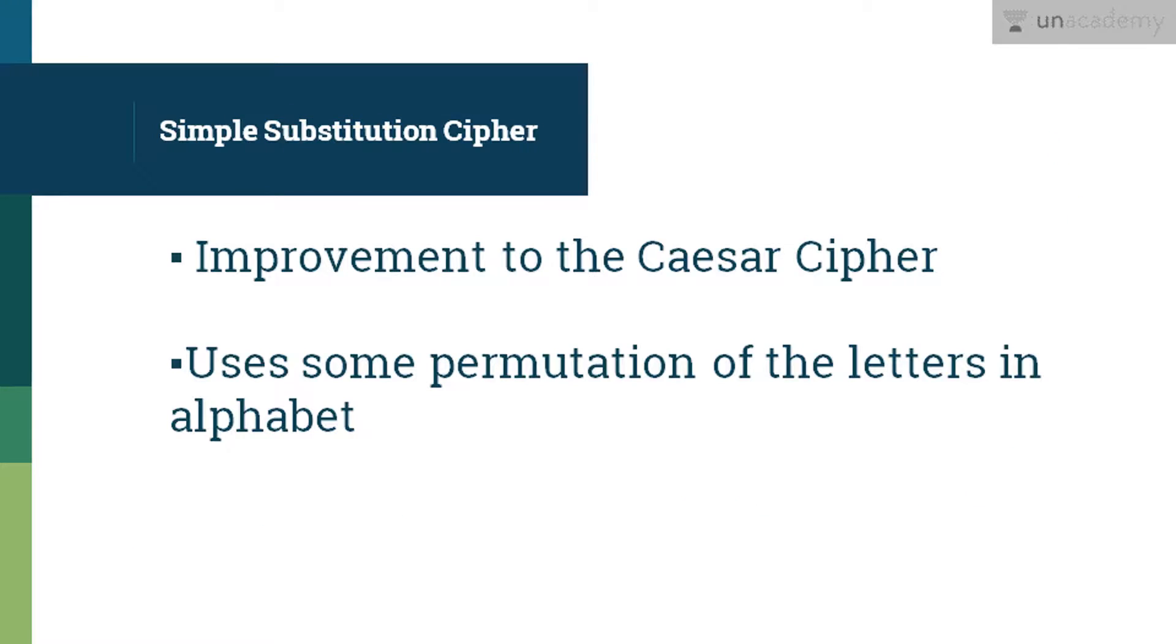The next technique is a simple substitution technique which is a more improvised version of the Caesar cipher technique. So instead of shifting the alphabets by some number, this scheme uses some permutation of the letters in the alphabet. Now, what is permutation? It is nothing but a jumbled up set of alphabets.